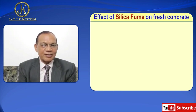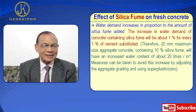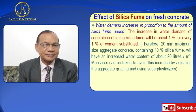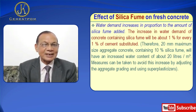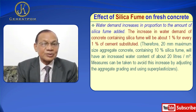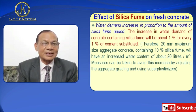Effects of silica fume on fresh concrete: water demand increases in proportion to the amount of silica fume. The increase in water demand of concrete containing silica fume will be 1% for every 1% substituted. Therefore, 20 mm maximum size aggregate concrete containing 10% silica fume will have an increased water content of about 20 litres per meter cube.